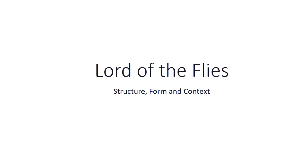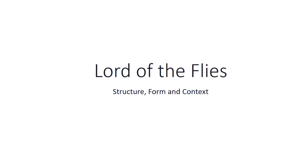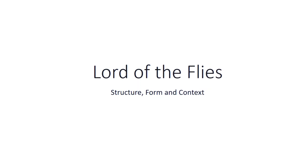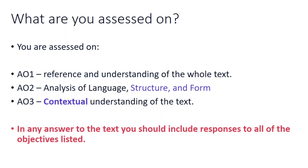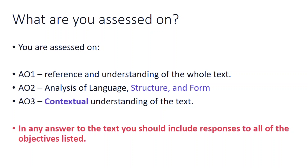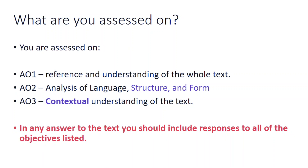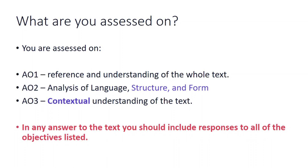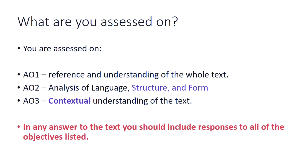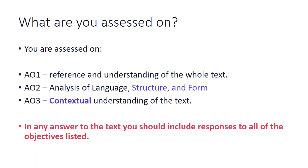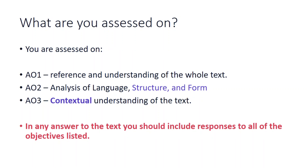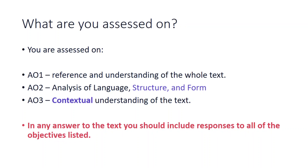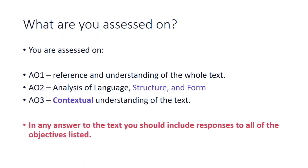I'm looking at Lord of the Flies by William Golding with a specific focus today on structure, form and context and how to embed those particular parts of the assessment criteria into responses. We focus on assessment objective 1 where we reference the text, assessment objective 2 where we think about structure, form and language in our analysis, and assessment objective 3 where we get the contextual linkage and understanding of the text. We need to balance our response to these assessment criteria based on the weightings in the specification, and in a good essay I'd expect to see reference to these assessment objectives frequently.